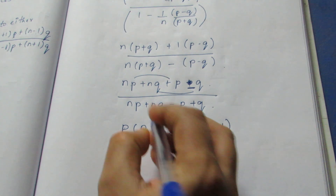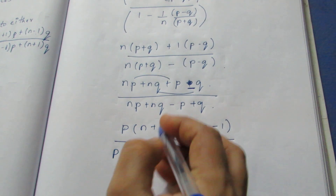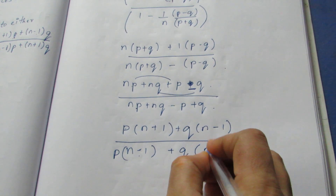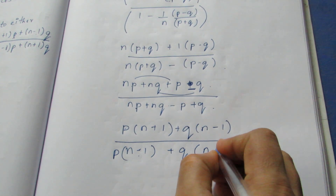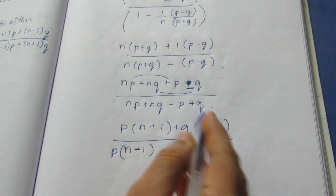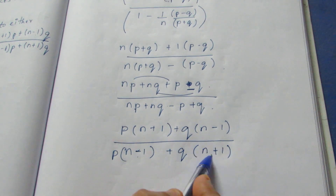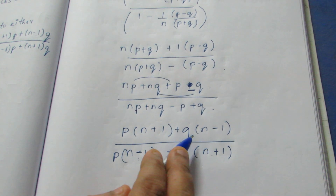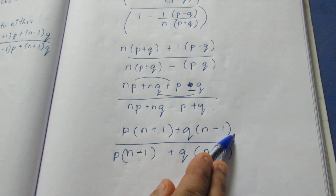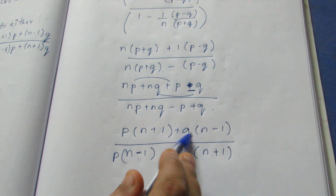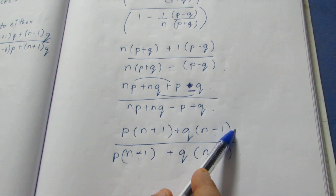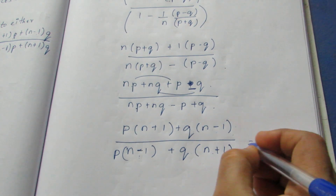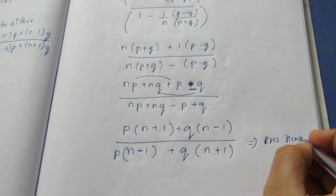Taking (n minus 1) common from the p terms and (n plus 1) from the q terms in the denominator, and (n plus 1) from p and (n minus 1) from q in the numerator, we prove this is equal to RHS. Hence proved.